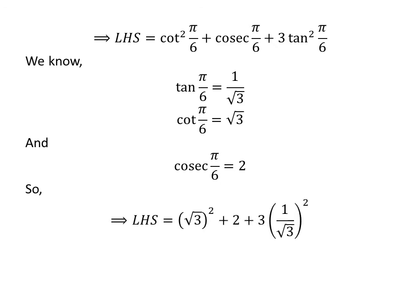Plugging these values into the expression gives us LHS = (√3)² + 2 + 3·(1/√3)². Since (√3)² = 3 and (1/√3)² = 1/3, the left-hand side equals 3 + 2 + 3/3.